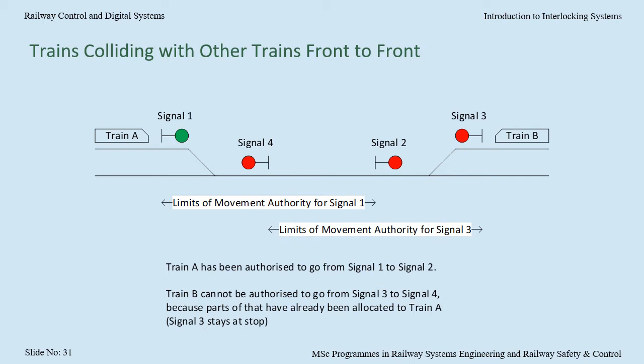Secondly, there is the train colliding with the front of another train. Before the interlocking allows a movement authority to be given to a train, it first confirms that no part of that infrastructure has already been allocated to another train. Here we can see that train A has been authorised to go from signal 1 to signal 2. The interlocking remembers this. If the signaller were to request train B to go from signal 3 to signal 4, even though there is currently no train between signal 3 and signal 4, the interlocking would reject the request because parts of that infrastructure have already been allocated to train A.